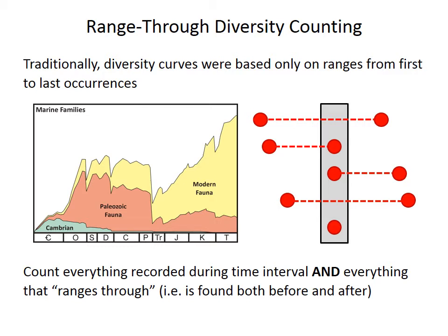In range-through counting, the diversity of a time interval — for example, this gray box — is based on everything actually recorded as a fossil in that interval, the three red dots you can see in the gray box, plus everything found both before and after — the two dashed lines that range through the interval but are not actually recorded within it. This would seem to make sense, as any taxon present before and after an interval must have been alive during that time, but it actually causes problems.